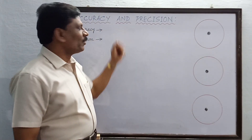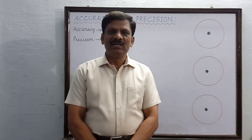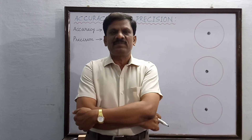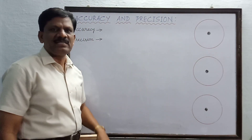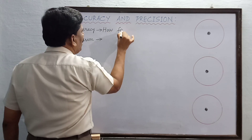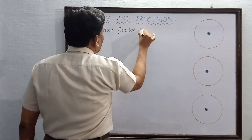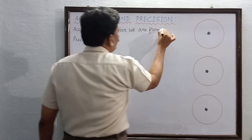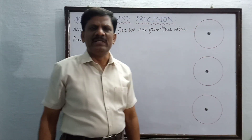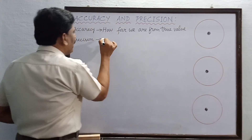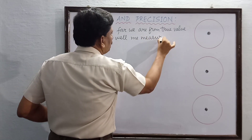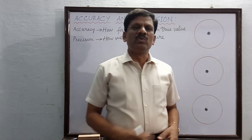Hi students, we are going to discuss accuracy and precision — two terms used while measuring physical quantities. Accuracy means how far we are from the true value of a physical quantity, whereas precision means how well we measure.